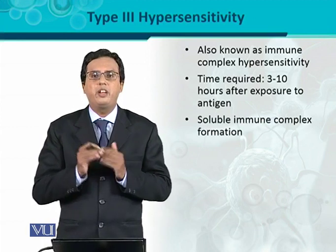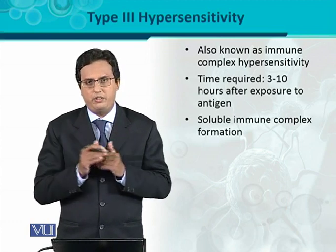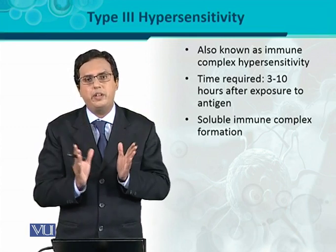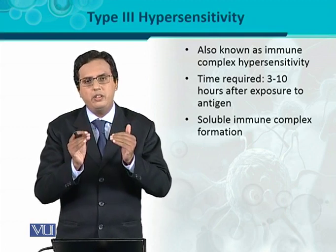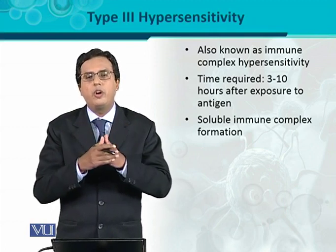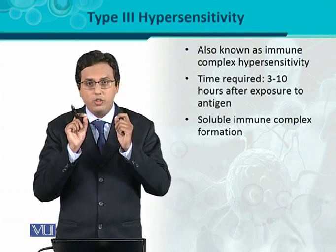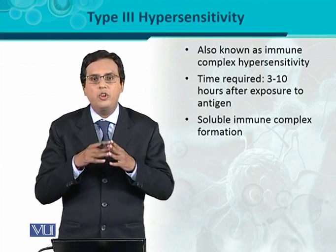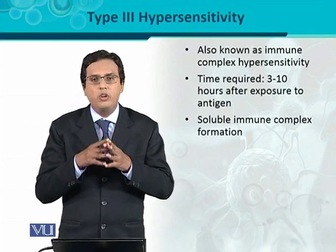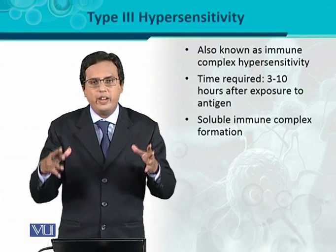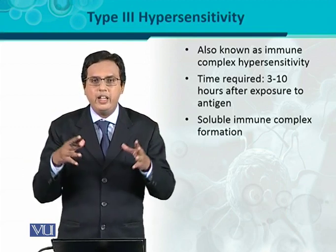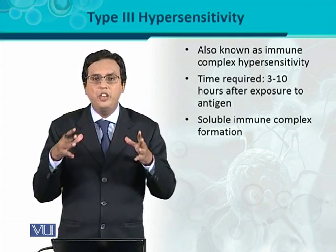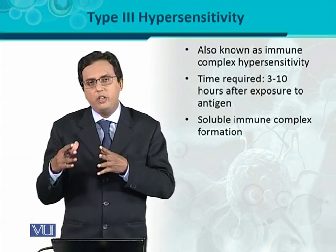Soluble immune complex formation is very critical in type 3 hypersensitivity. In type 2, we saw that the antigen is present on the surface of a cell — either endogenous, like RBCs in the Rh case, or exogenous like a drug — and it must be fixed or adsorbed on the surface of a certain cell. But in type 3, that is not required. Here the antigen is in soluble form, and the corresponding specific antibodies react with it, forming a soluble immune complex.